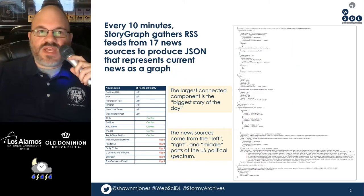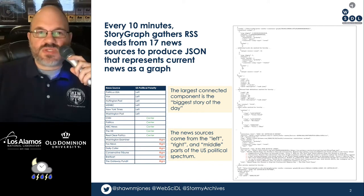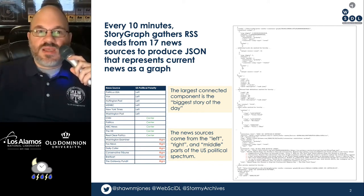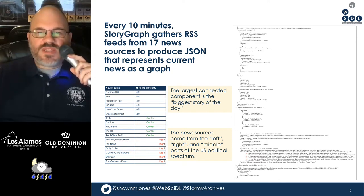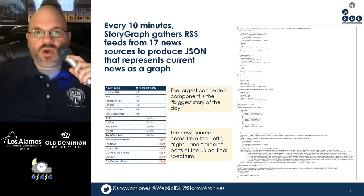Every 10 minutes, Storygraph gathers RSS feeds from 17 news sources to produce JSON that represents the current news as a graph. We see this JSON on the right, and there's a ton of information in here that could be processed by machines, but it's very difficult for a human to get the gist of what's really going on.